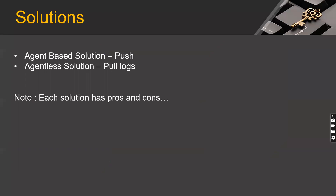Both solutions have pros and cons. With agents, you have to manage them — update configurations and update the agent itself over time. With an agentless solution, you have less control; if logs stop coming you have to monitor that separately. The key difference is: agent-based solutions use a push mechanism — the agent pushes logs towards the SIEM. Agentless solutions use a pull mechanism — the SIEM pulls logs from the Windows system, which requires appropriate access to do so.